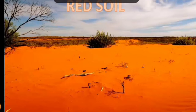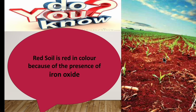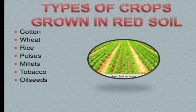Red soil is more sandy and less clayey in nature, and is present in semi-arid regions. It is rich in iron. Red soil is red or brown in color because of the presence of iron oxide — keep this in mind, as it may be asked as a one-word question. Areas where red soil is found include Tamil Nadu, Karnataka, Madhya Pradesh, Maharashtra, West Bengal, and Eastern Rajasthan. Major crops grown in red soil are ragi, groundnut, millet, tobacco, potato, rice, wheat, and sugarcane.